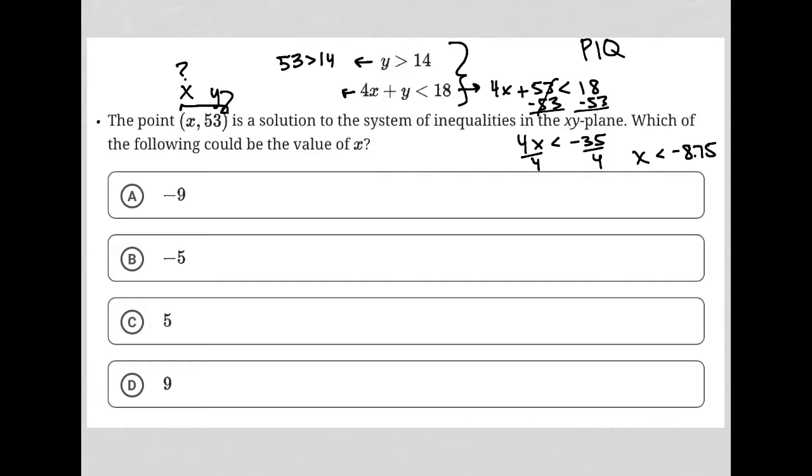The question wants to know which of the following could be the value of x. Well, which answer choice is less than negative 8.75? There is only one, and that would be choice A. Negative 9 is less than negative 8.75. Choice A is our correct answer.